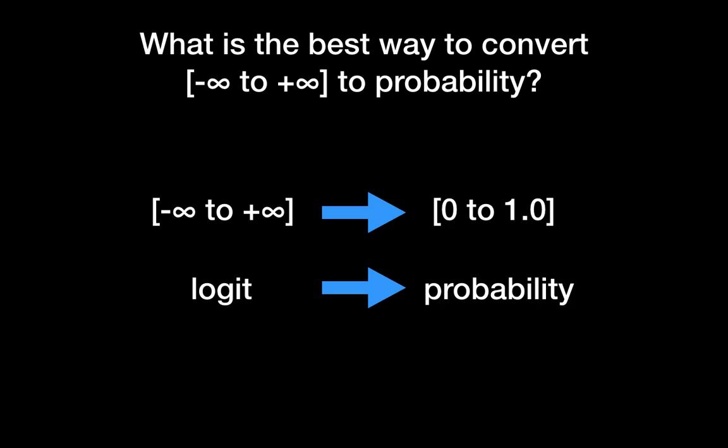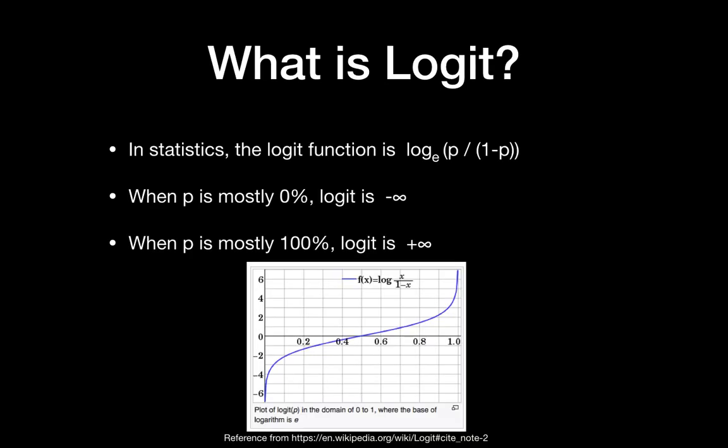Before talking about softmax, we need to understand logit, because logit is the input to softmax. In statistics, there is a term logit and probability. Once you have the probability, you can convert it to logit using the equation shown. When the probability is 0%, the logit is minus infinity, and when the probability is 100%, the logit is plus infinity. You can also see this from the graph — logit is monotonically increasing with probability.